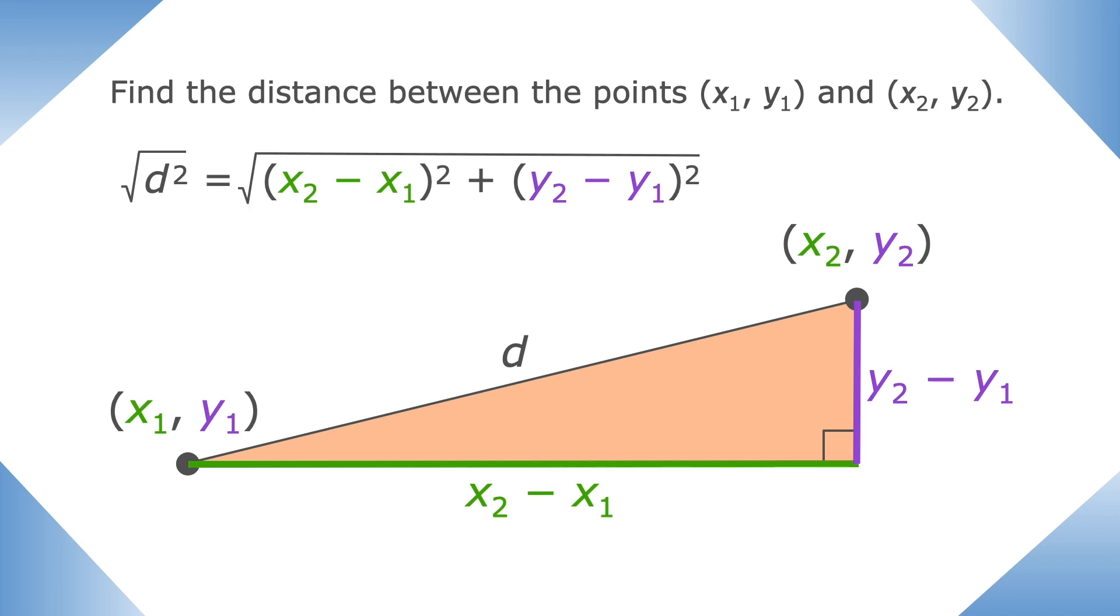This gives us distance equals the square root of (x2 minus x1) squared plus (y2 minus y1) squared. So this is the general distance formula. It will allow us to find the distance between any two points on the coordinate plane. Nice!